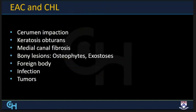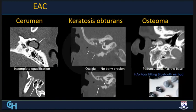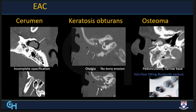Starting with the external auditory canal: cerumen accumulation is mostly incidental, causing incomplete opacification with the bony canal intact without erosion. In keratosis obturans, there is near obliteration of the external auditory canal with expansion and thinning but no erosion; clinically they present with otalgia. When there was concern about whether findings represented thinning or erosion, the patient underwent MRI and did not have a cholesteatoma — this was actually keratosis obturans.